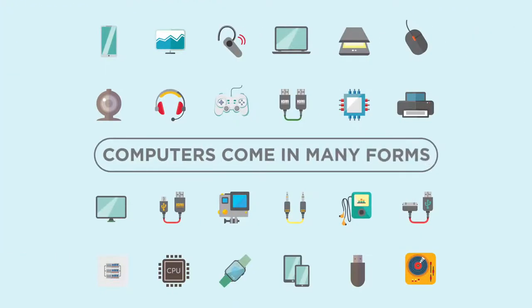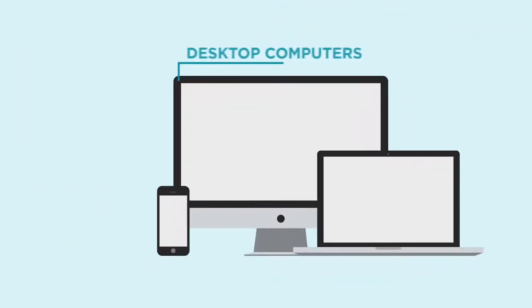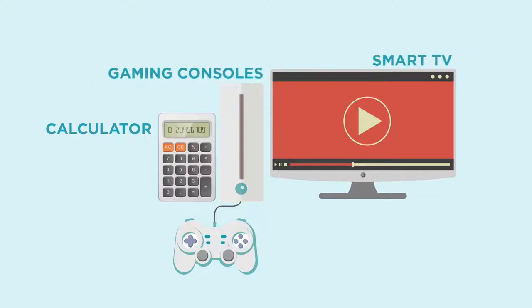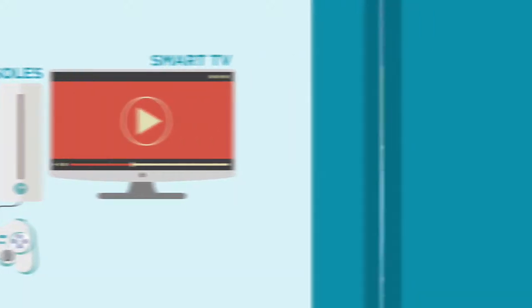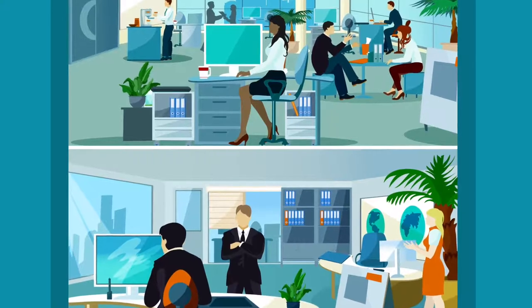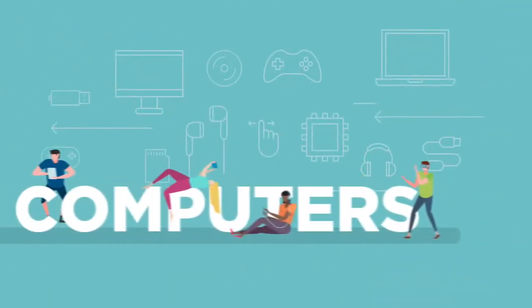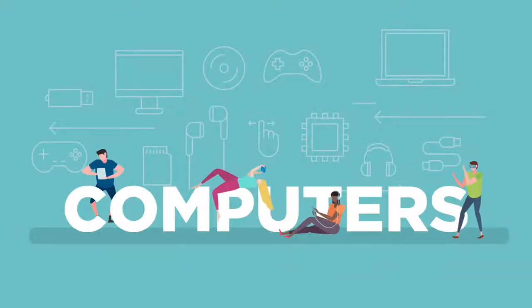Computers come in many forms. Some of the most common types are desktop computers, laptops, and mobile phones. But other types of devices, such as calculators, gaming consoles, and smart TVs, are also computers. The types of computers that we use in our daily lives are called personal computers. Let's look at some of the most common types of personal computing devices and their uses.